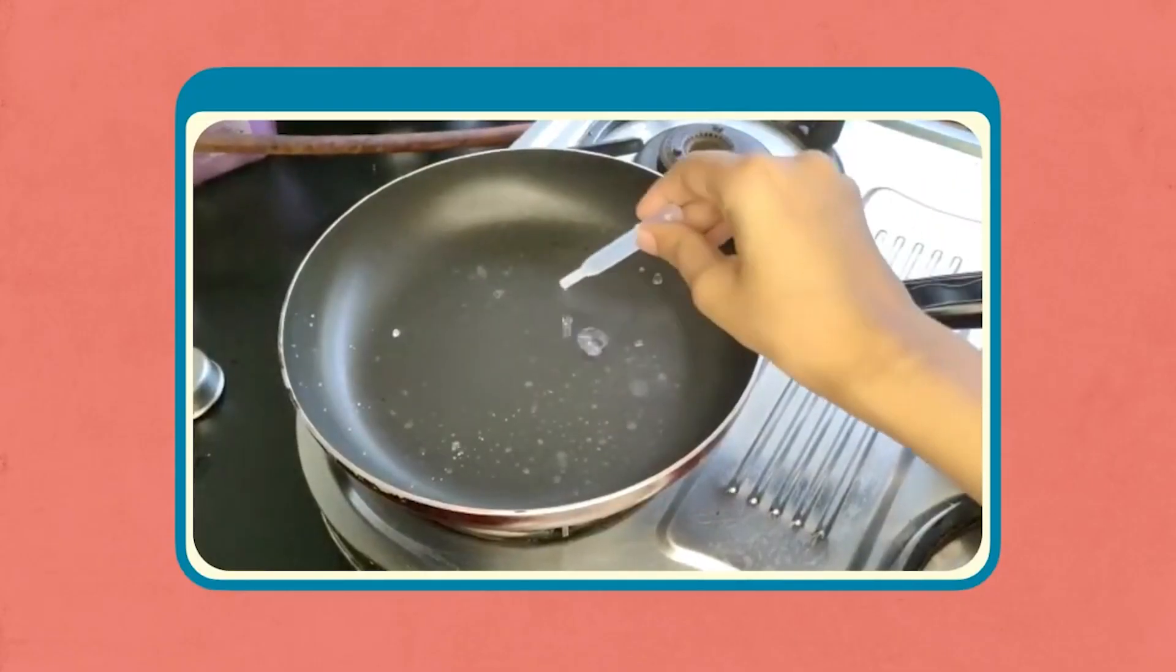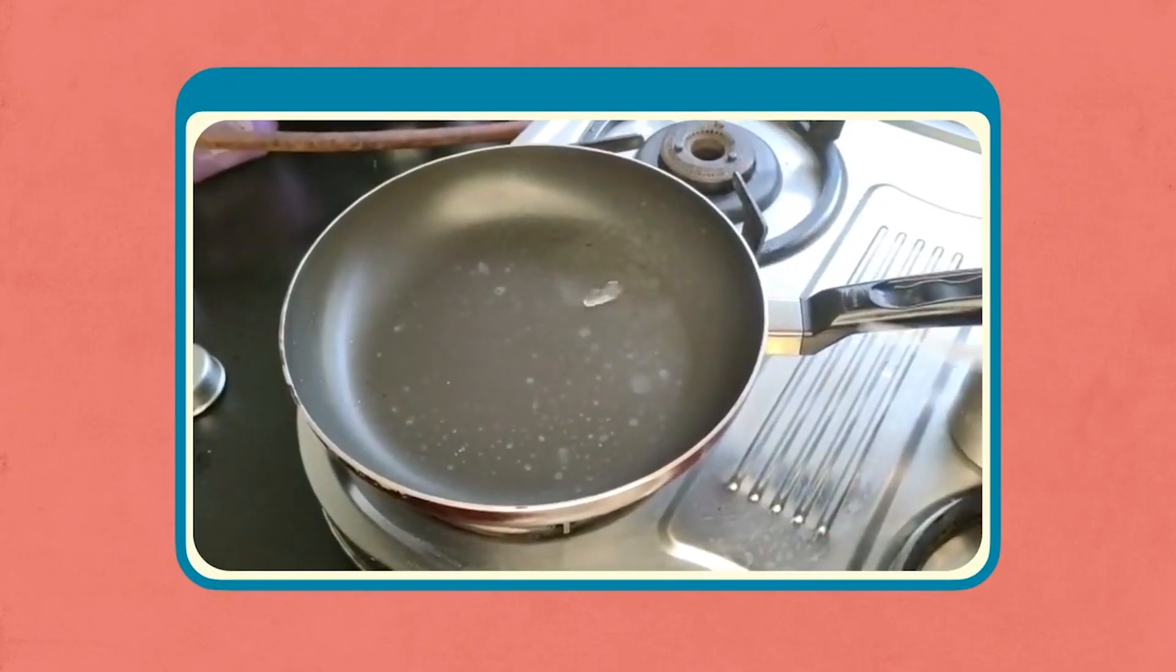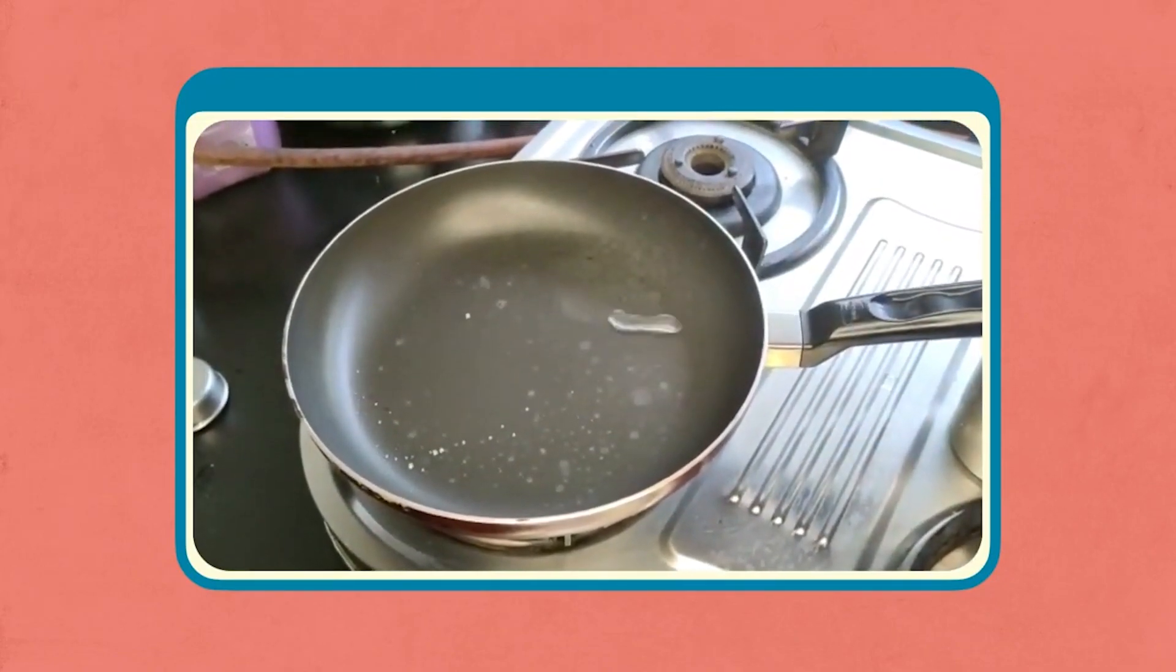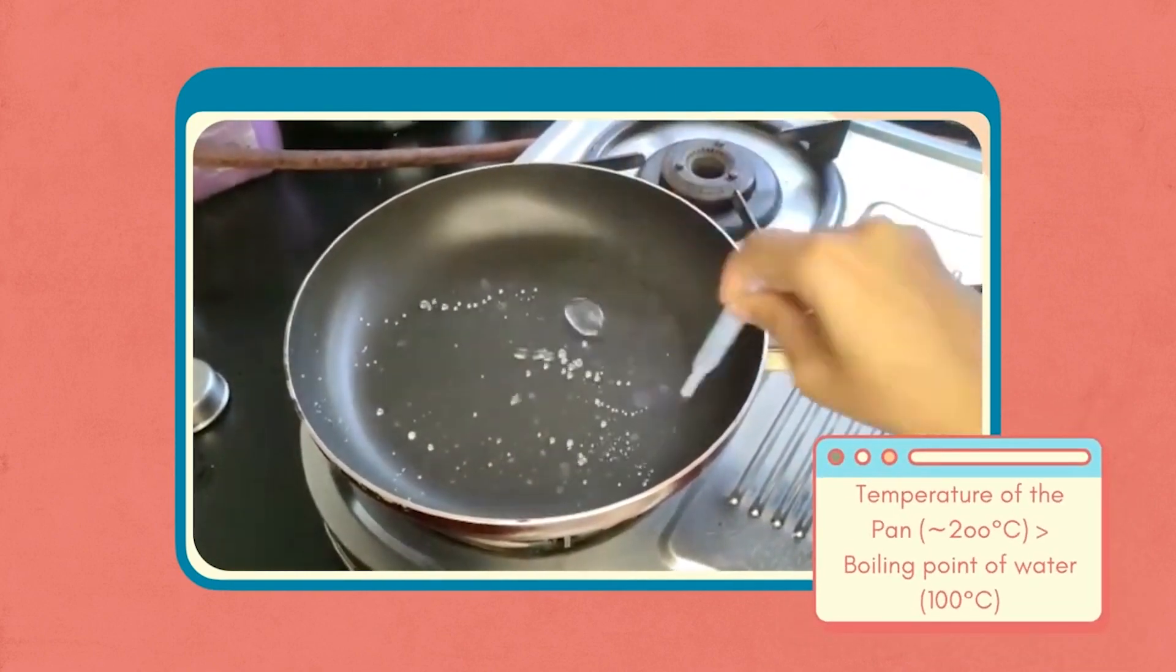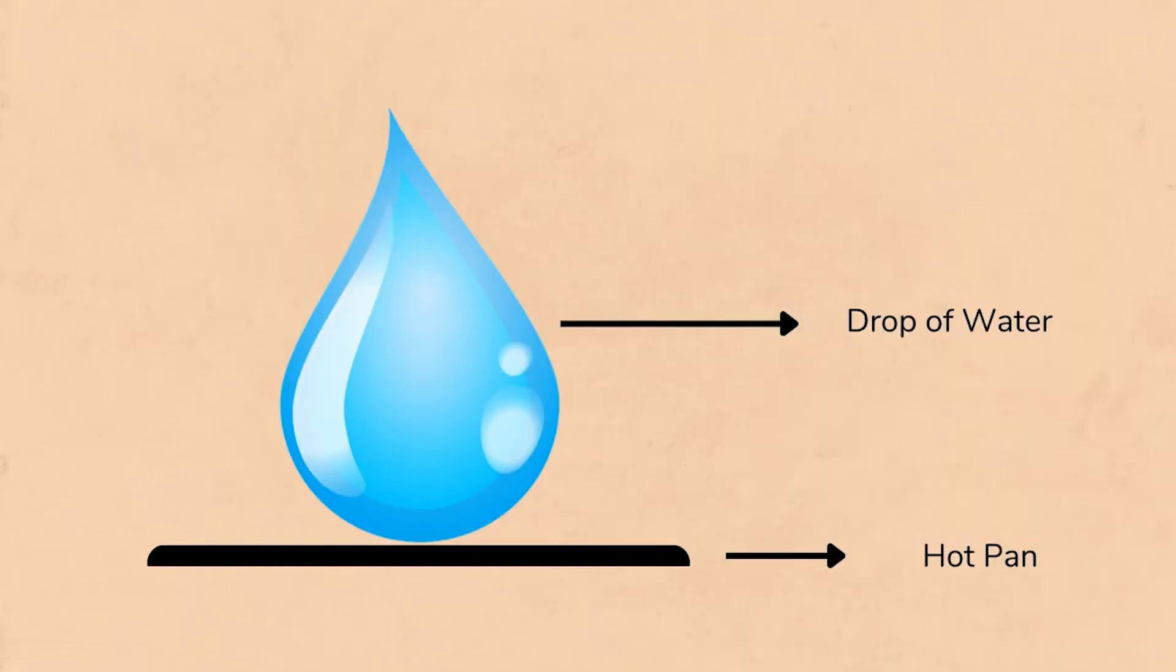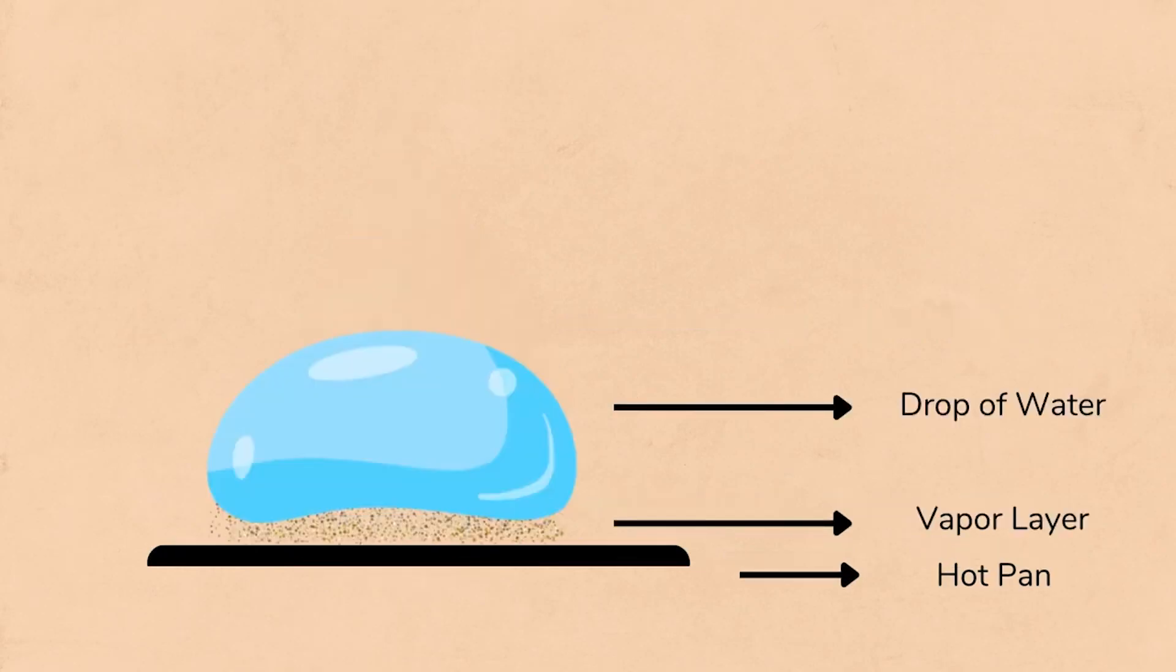However, if we continue heating the pan for some more time and then sprinkle water again, we see the drops levitating and gliding across the pan. This is because the temperature of the pan now is significantly higher than the boiling point of water. Therefore, as soon as the surface of the drop touches the pan, it instantly evaporates and forms an insulated gas cushion between the drop and the pan, preventing any direct contact between them.